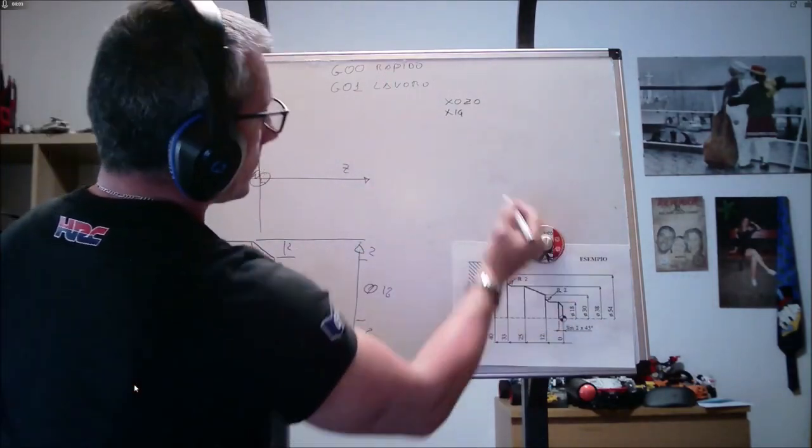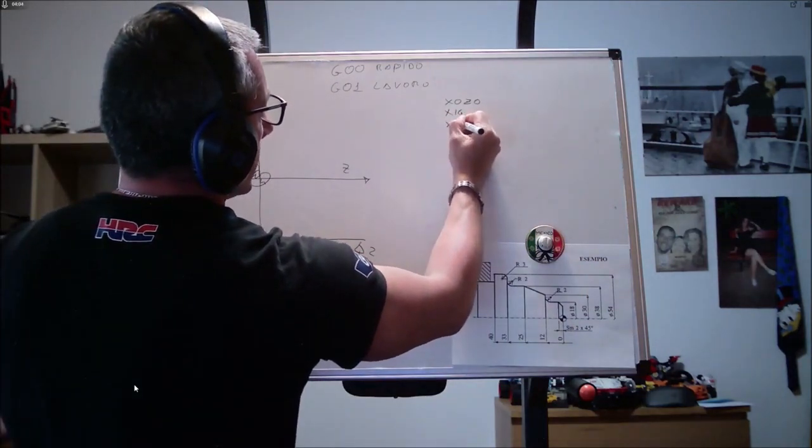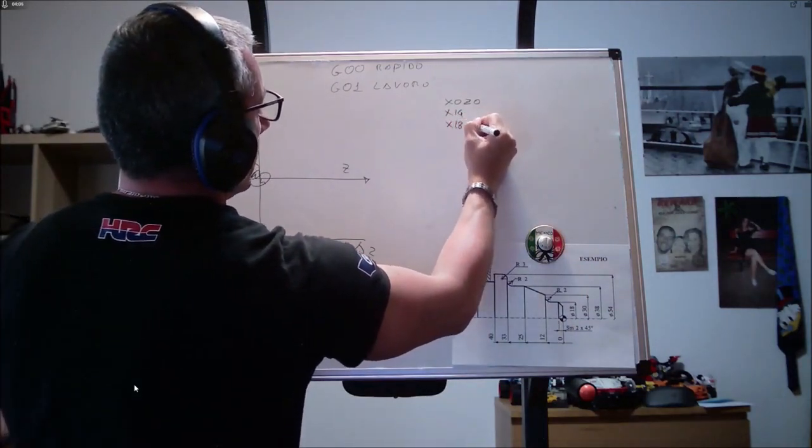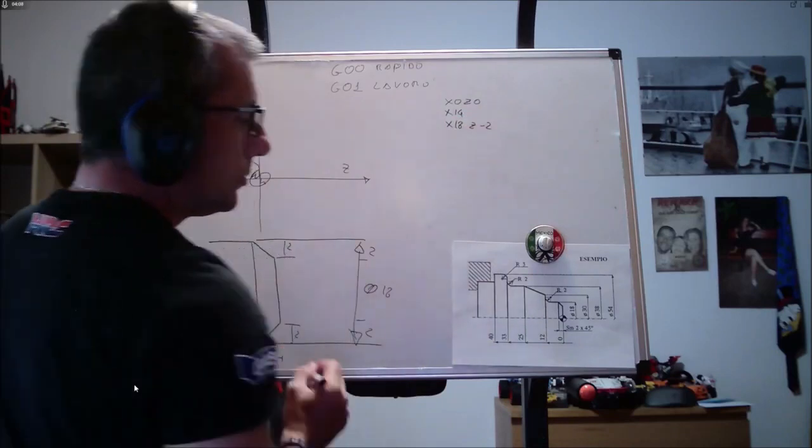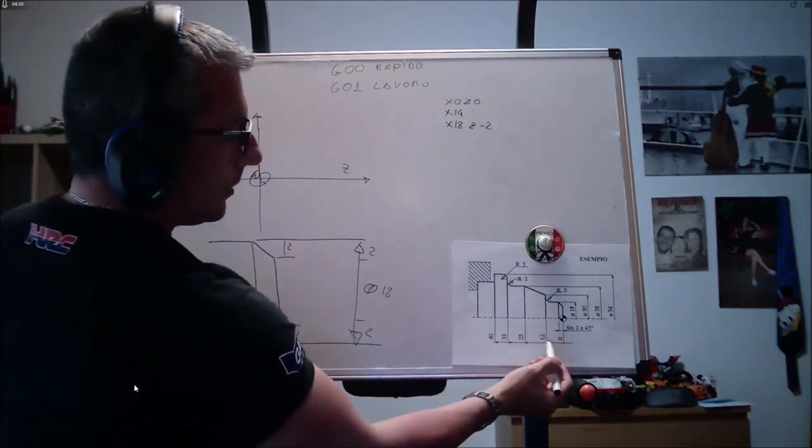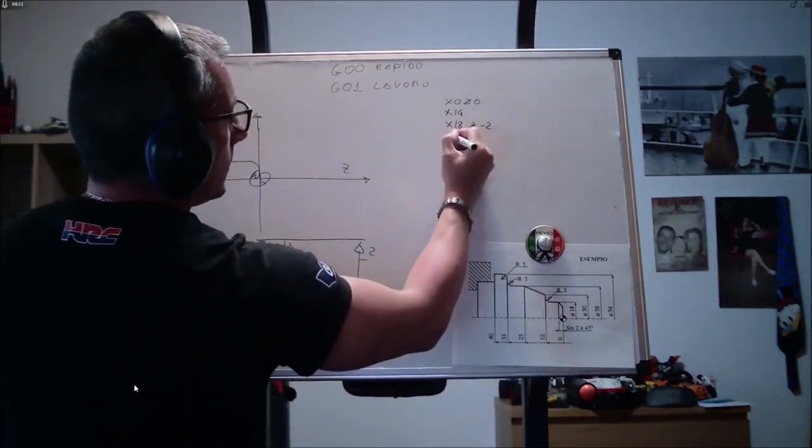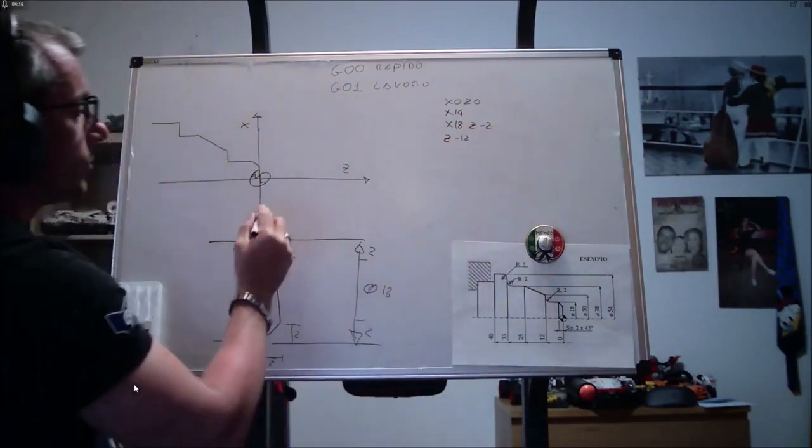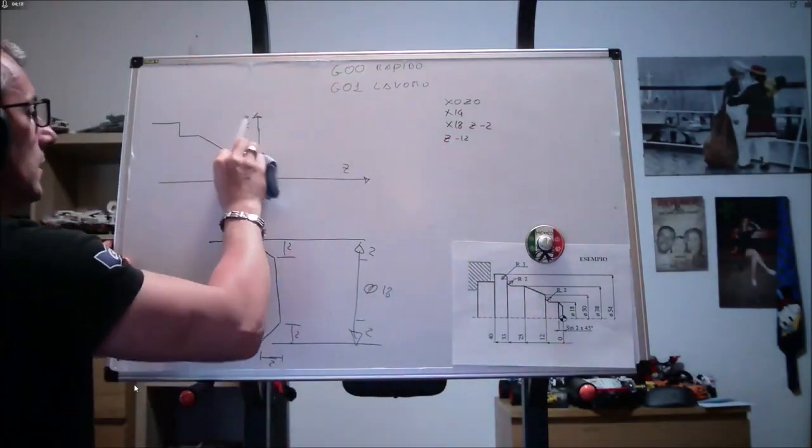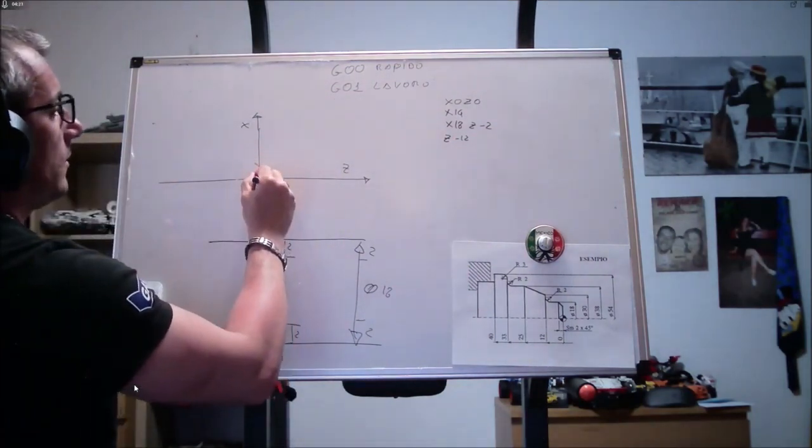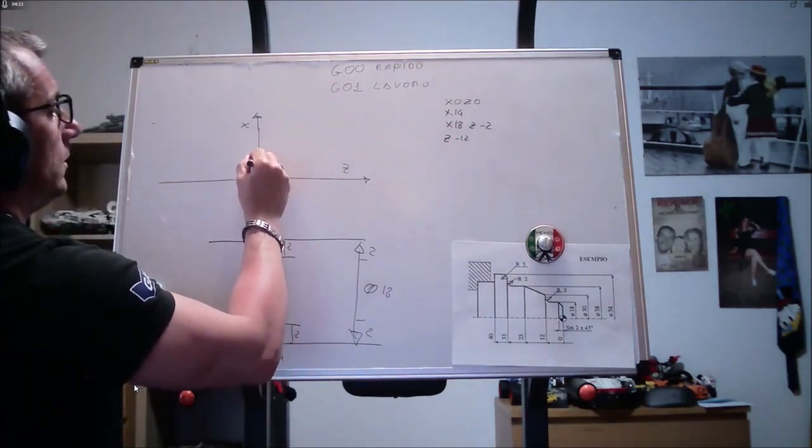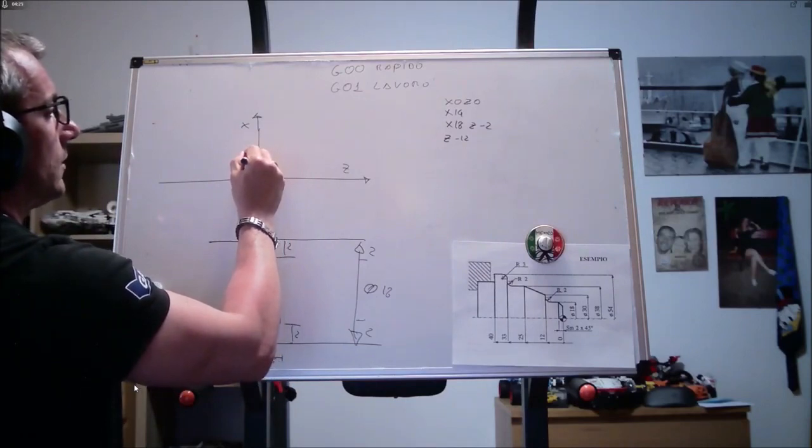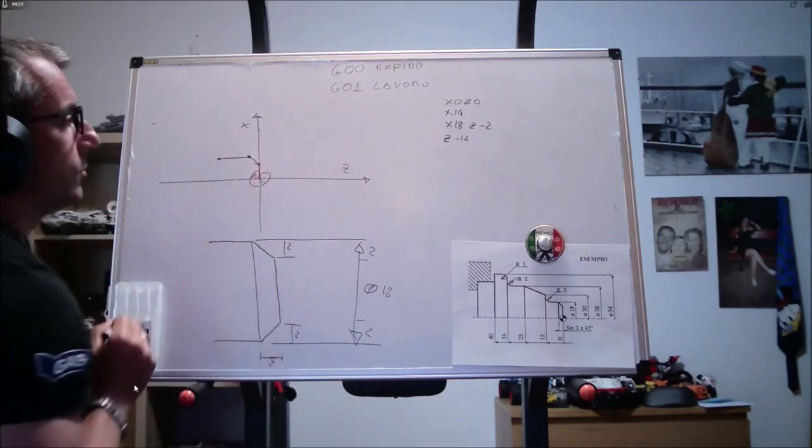Secondo punto dello smusso, allora sì che andiamo a X 18, e a Z meno 2. Poi ci spostiamo a Z meno 12. Vedete, è il nostro punto nello spazio. Cancelliamo. X 0, Z 0, X 14, X 18, Z meno 2, Z meno 12.